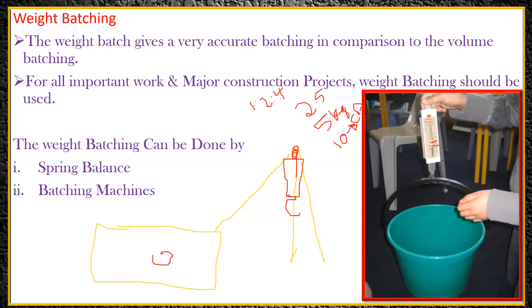For a very small amount of concreting, we go with the spring balance. The capacity of a spring balance varies from 40 to 200 kg — that is a usual spring balance available in the market. As per the textbook, it is mentioned as 40 to 200 kg capacity.